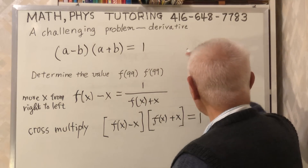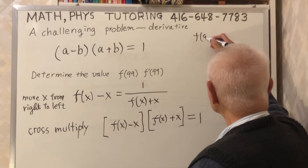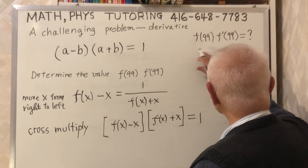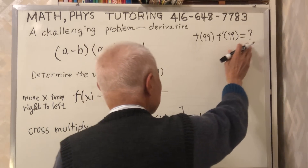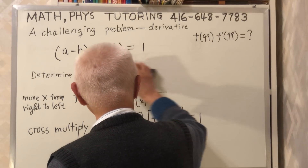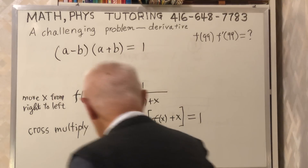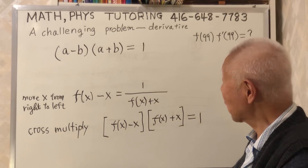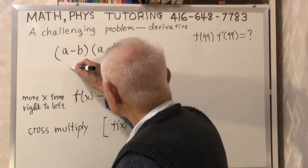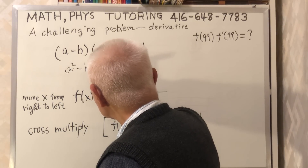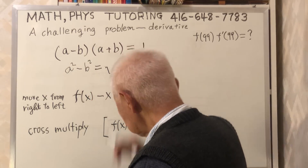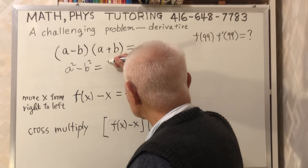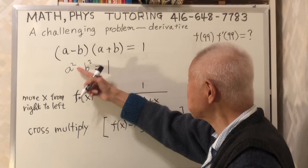Don't forget — this is what I want to find. A minus B times A plus B equals 1. But what is A minus B times A plus B? It is A squared minus B squared.